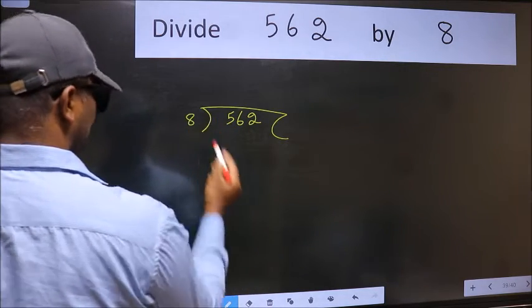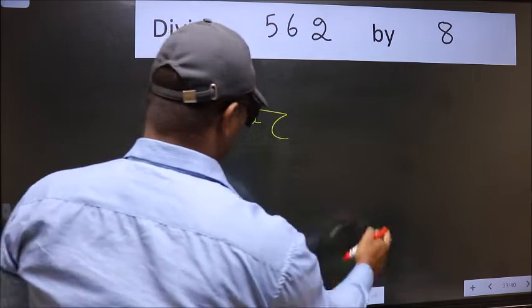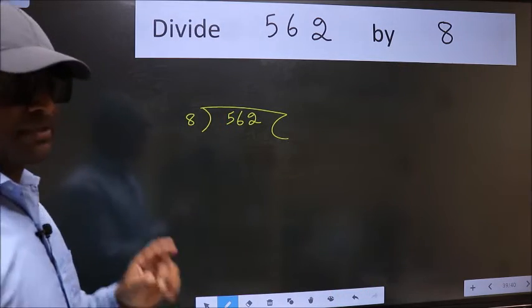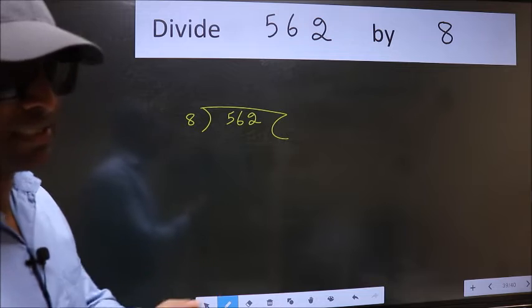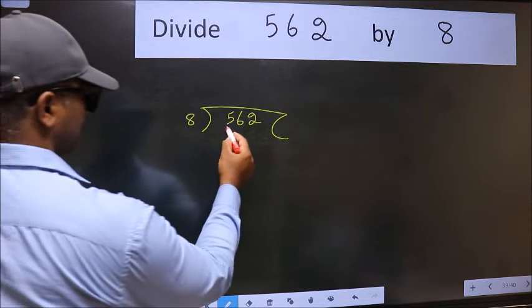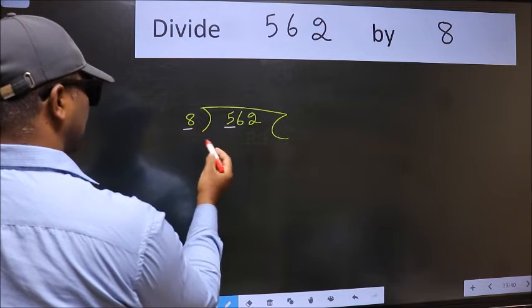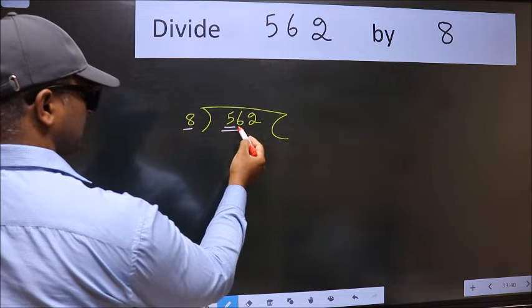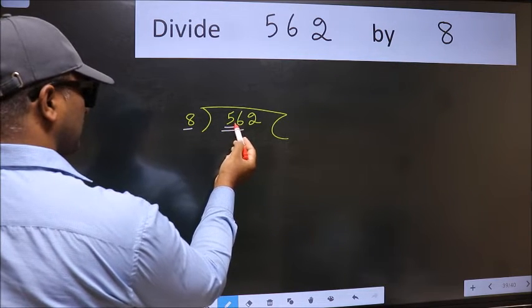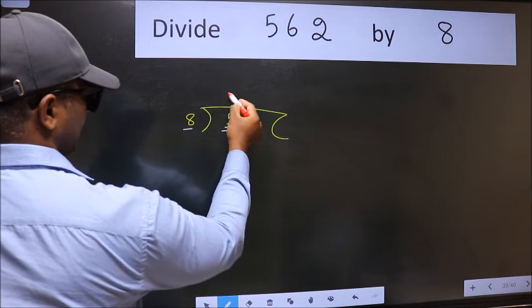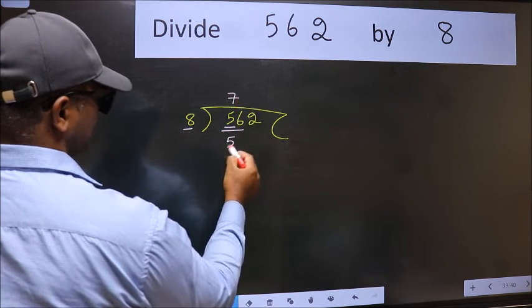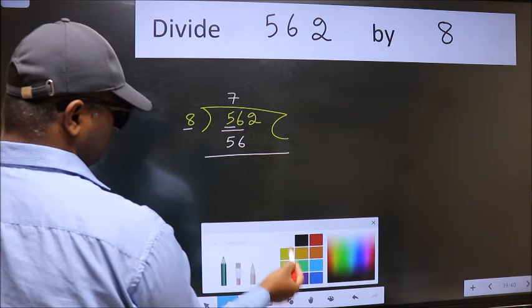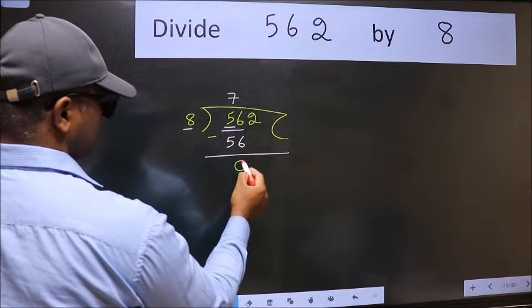8 here. This is your step 1. Next, here we have 5 and here 8. 5 is smaller than 8, so take two numbers, 56. When do we get 56 in 8 table? 8 sevens 56. Now we should subtract. We get 0.